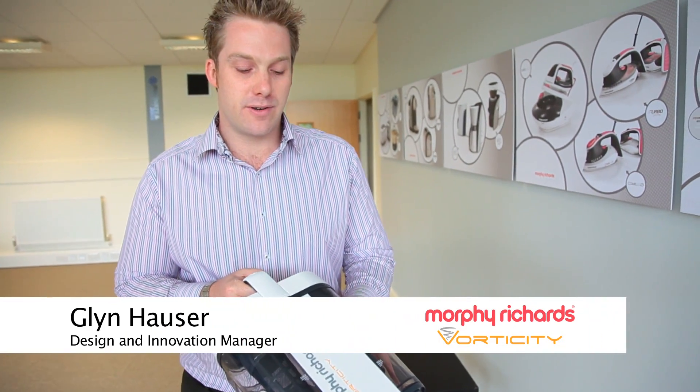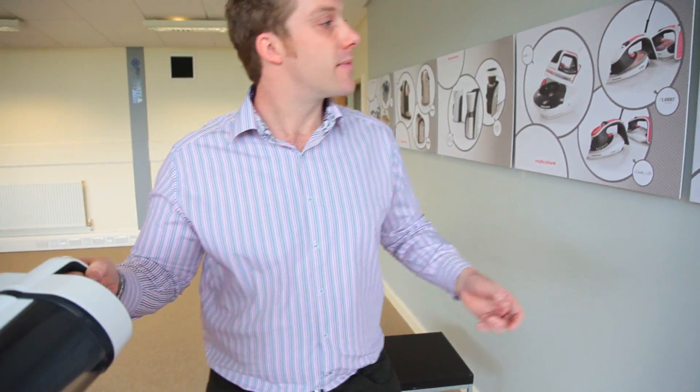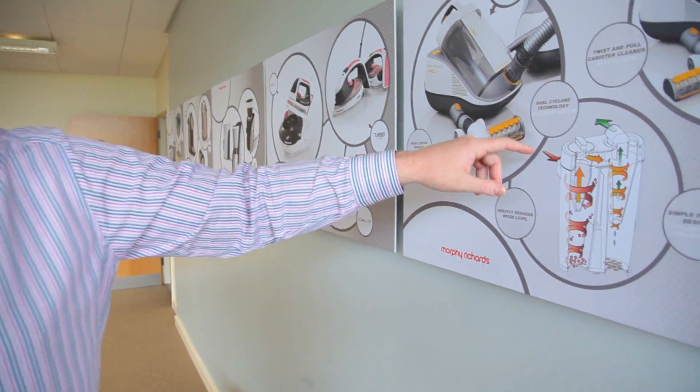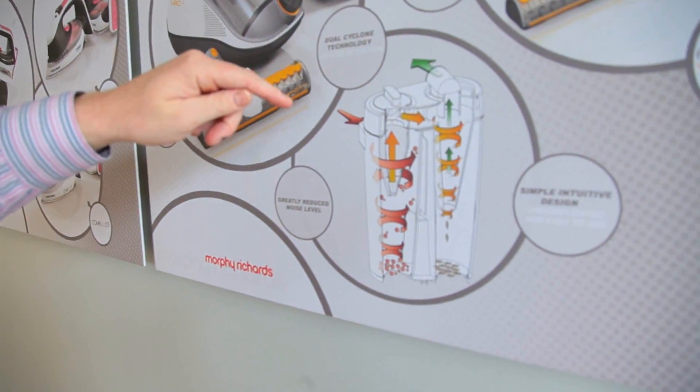I'm very quickly and briefly going to explain how the bagless system works on the Morphy Richards Vorticity product. So here we have a cutaway cross-section of the canister.